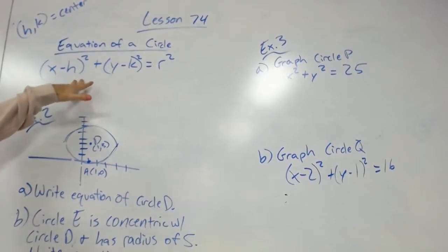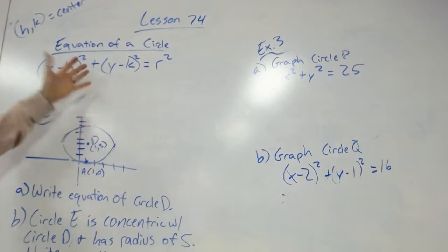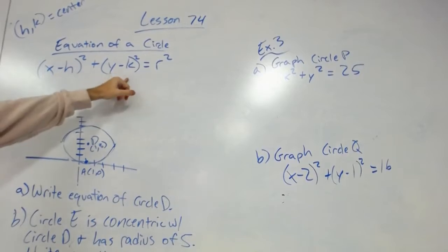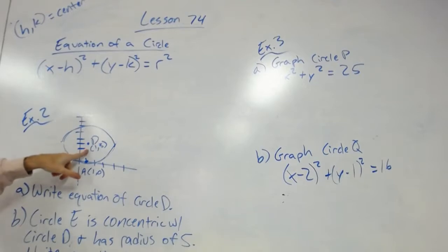If you want the reason why, look at example one - it's basically just Pythagorean theorem. The x and y are just coordinates on the circle. h and k is your center of the circle.